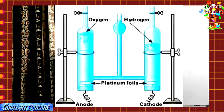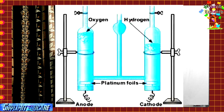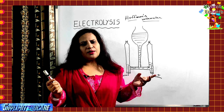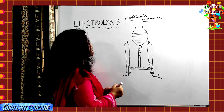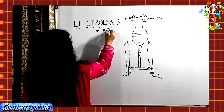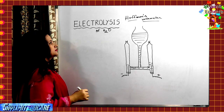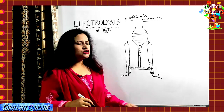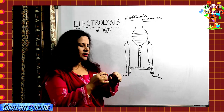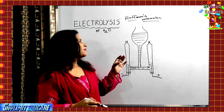Now I am going to show you the image of Hoffman's voltimeter, where the electrolysis of water is conducted. This is Hoffman's voltimeter, specially used for the electrolysis of water. We are going to discuss the electrolysis of water and how it takes place using this special electrolytic cell.